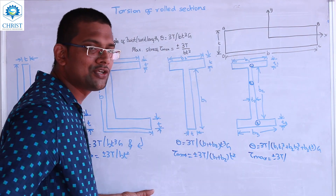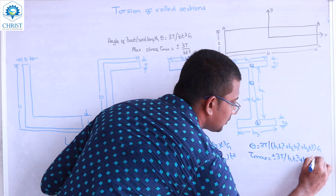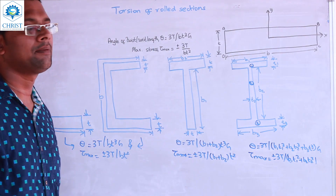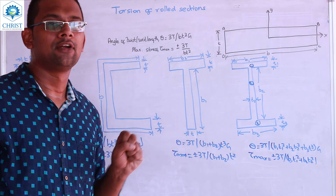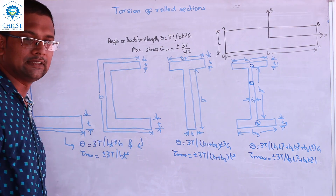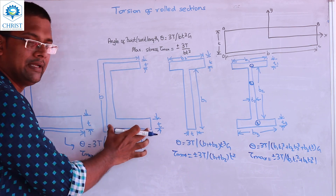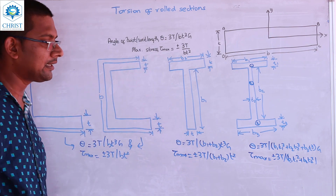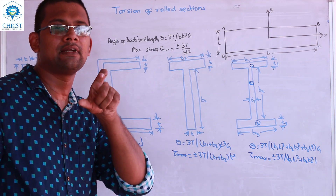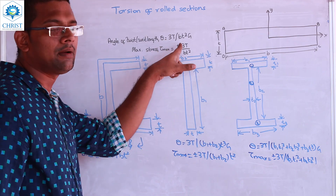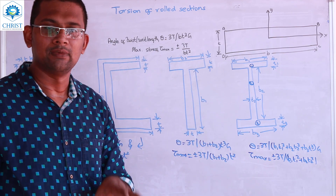For τmax, the formula is evaluated for each arm: τmax equals Gθ·ti for arm i, using the thickest arm to find the overall maximum. If you are given a figure with dimensions B1, B2, B3 and thicknesses T1, T2, T3, you simply substitute those values into the formula to find θ and τmax.